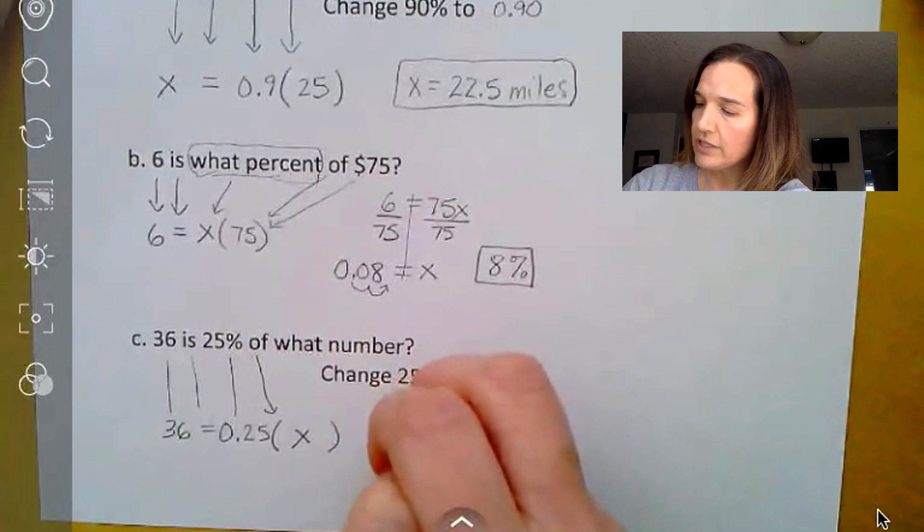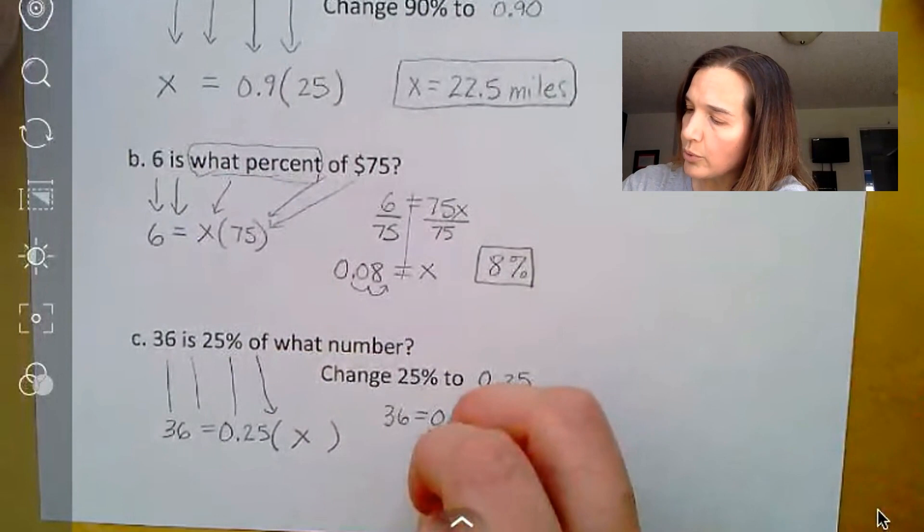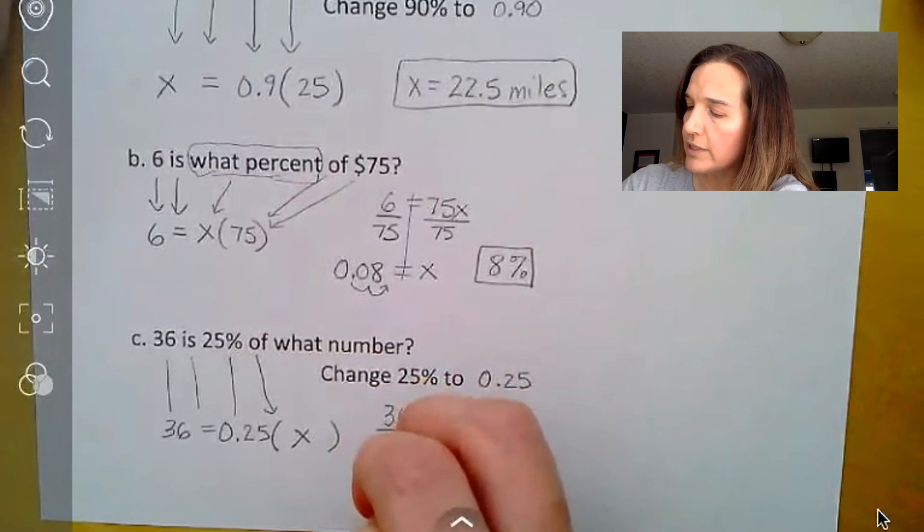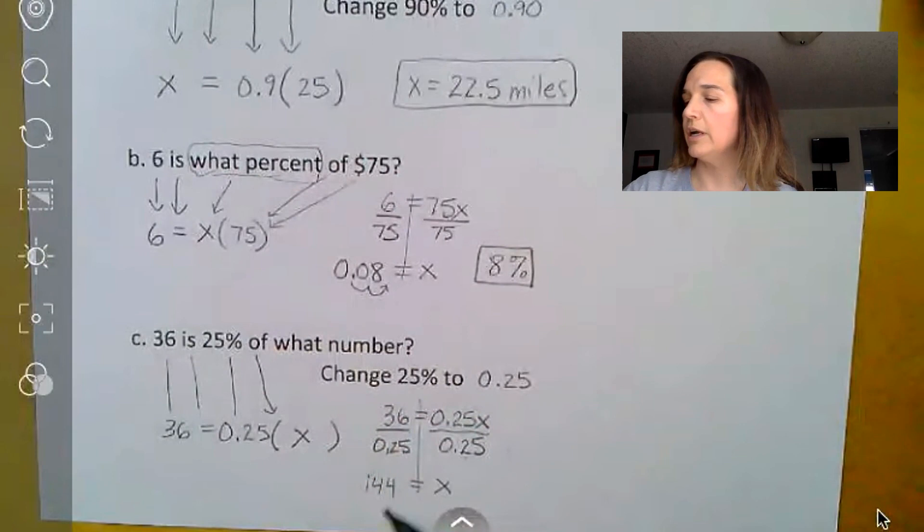So I am left with 36 equals 0.25x. And again, I want to isolate the variable, get x by itself. Right now it's being multiplied by 0.25. So I do the opposite of multiplying, which is dividing. But whatever I do on one side, I have to do on the other. We end up with 1x on this side. And then on the other side, we end up with 144.